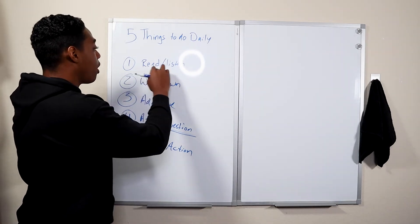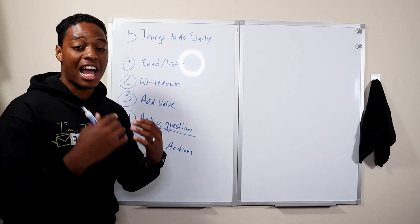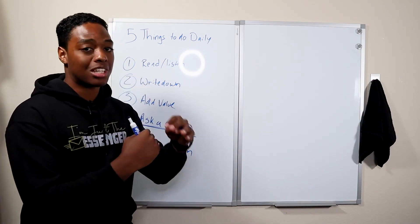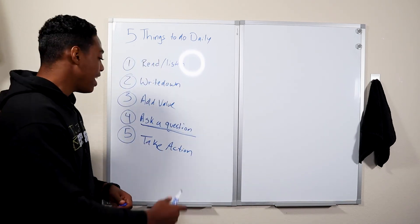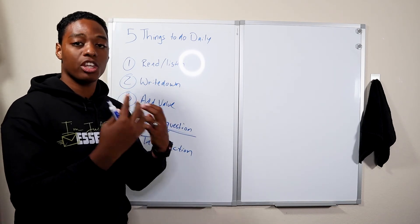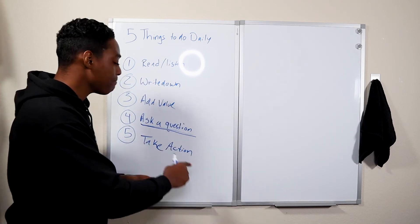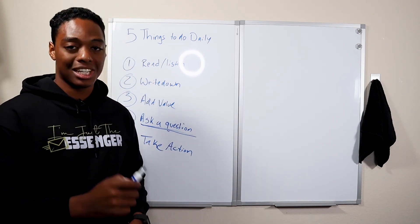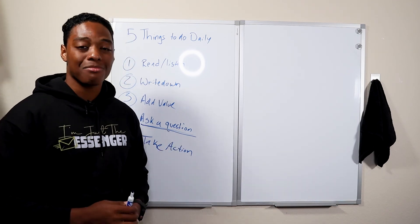So now you have a way where you are consuming, you're adding value to yourself. You're writing it down so that not only do you remember it, but you're stacking these things that you learn daily on top of each other, which is going to allow you to add value to the people around you. And finally, you're going to ask yourself questions to help make sure that you're consuming the right thing and you're finding the answer to the next step. And lastly, you're taking action on the things that you know you need to take action on. And this is how you improve your life a day at a time.